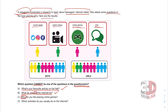Option C: Why do you like playing online games? The reasons are not shown here, so this cannot be an answer. The answer is C. Option D: Which activities do you usually do on the internet? I usually go on social media, I usually watch videos — this can be an answer. The answer is C.